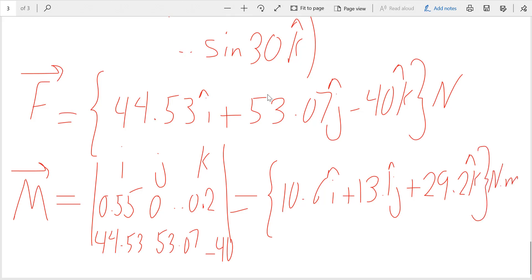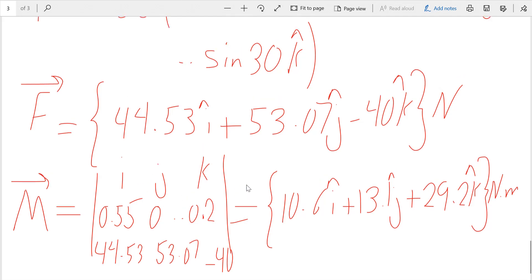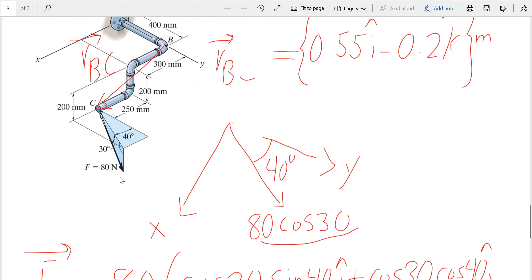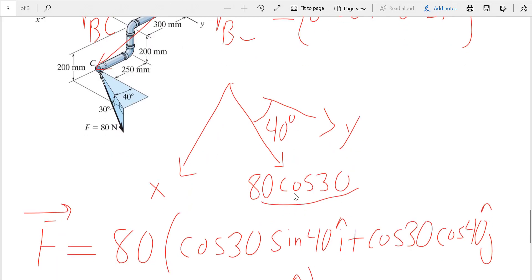So the problem is similar to the previous problem. We're solving R cross F. The only difference was that we had to find F in Cartesian form. So 80 cosine 30 was the projection of the force F on the plane, and then once we have it on the plane, that's a 2D problem to find the X and Y components.